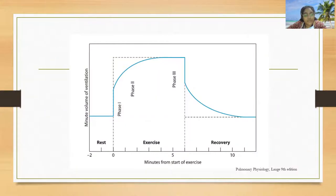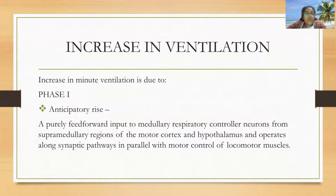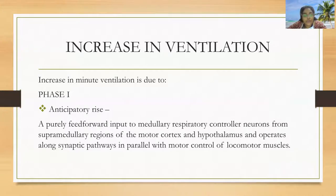A graph shows minute volume of ventilation versus minutes from the start of exercise, divided into phase 1, 2, and 3. In phase 1, there is a sudden rise; in phase 2, there is a curving; then it plateaus in phase 3. The sudden increase in ventilation in phase 1 is explained by anticipation — an anticipatory rise driven by a purely feed-forward input to medullary respiratory control neurons from the supramedullary regions of the motor cortex and hypothalamus, operating along synaptic pathways in parallel with the motor control of locomotor muscles.